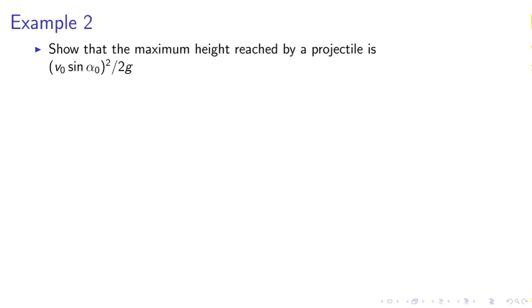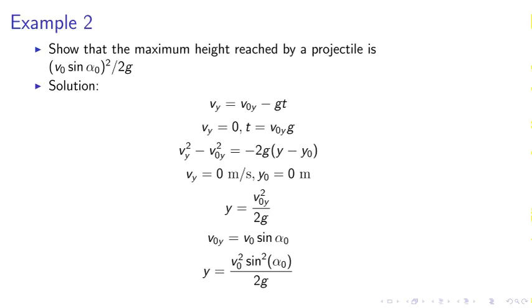Example 2, we may show that the maximum height reached by a projectile is v sine alpha naught squared over 2g. We may have vy equals v zero y minus gt. We use the equation relating the velocities to the acceleration g. So we obtain y and then we obtain consequently y in terms of alpha naught.